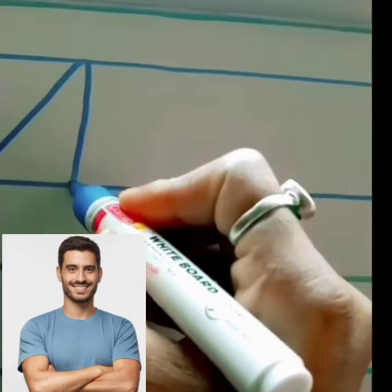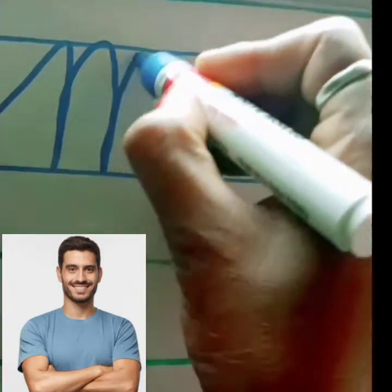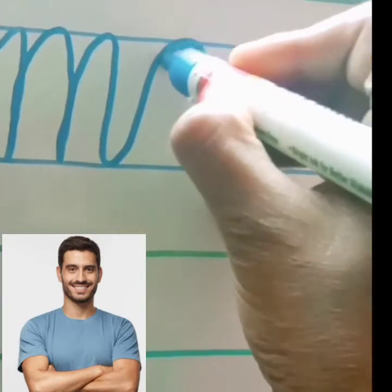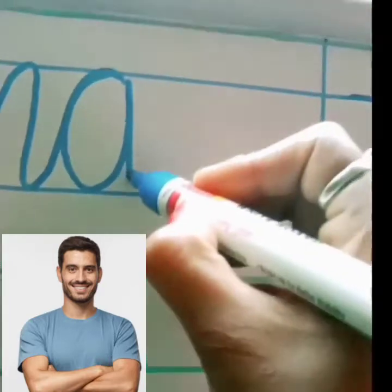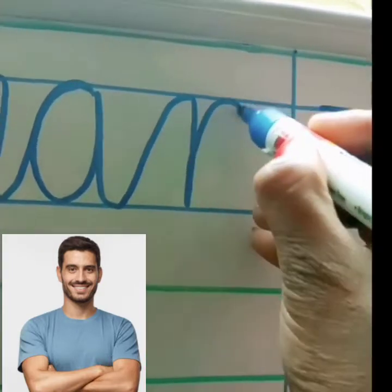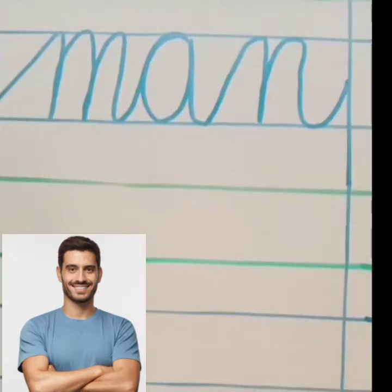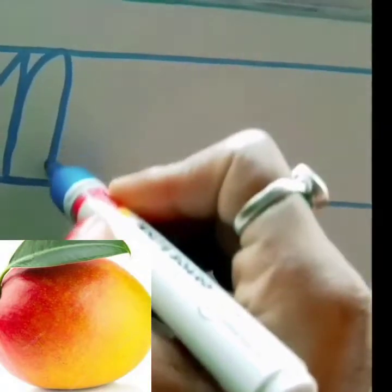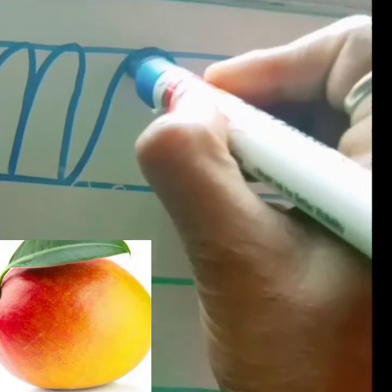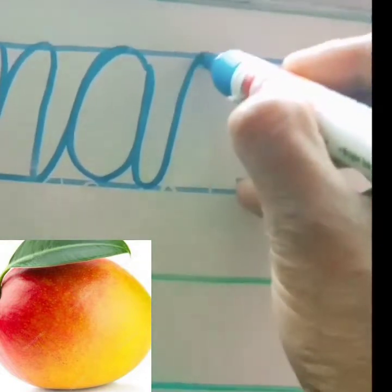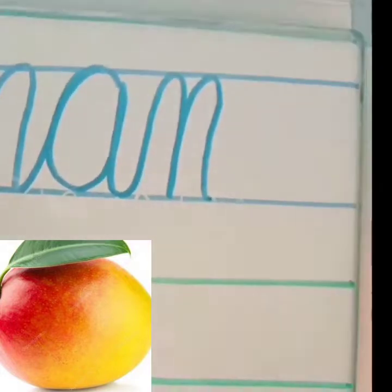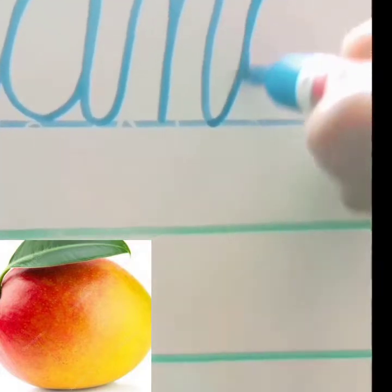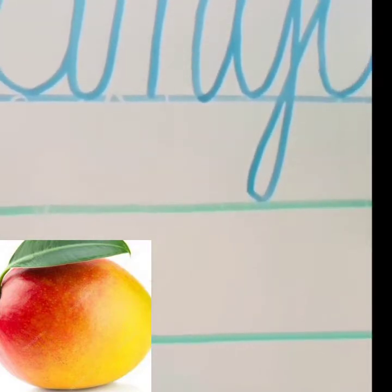Next alphabet M. M for man. M, A, N, man. M for mango. M, A, N, G, O, mango.